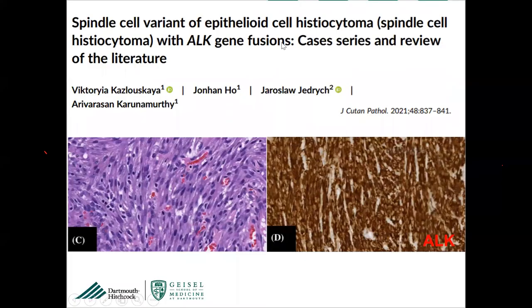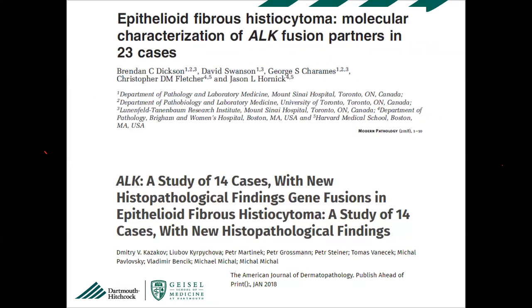When you name tumors descriptively and then study more cases, the histologic spectrum turns out to be wider. One thing you must know is that epithelioid fibrous histiocytoma can be quite spindly — even diffusely spindly with nothing epithelioid — yet still harbor ALK rearrangements and show diffuse ALK positivity. A recent paper published last month describes more cases of the spindle cell variant of epithelioid fibrous histiocytoma.